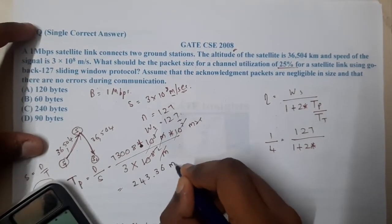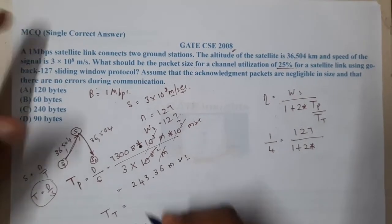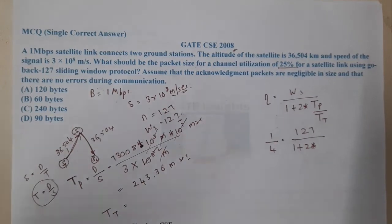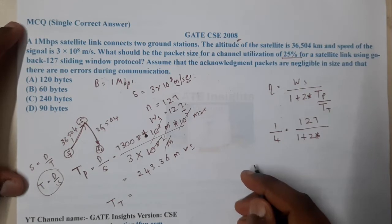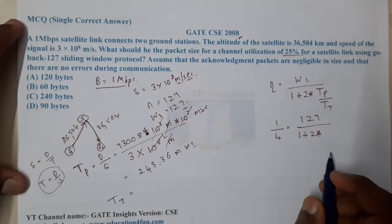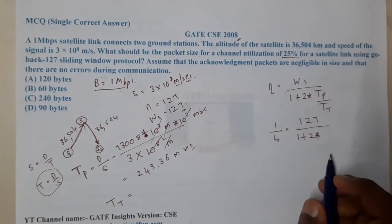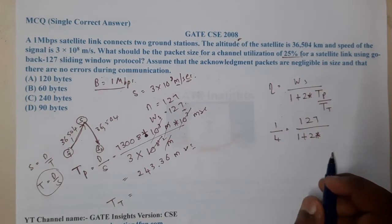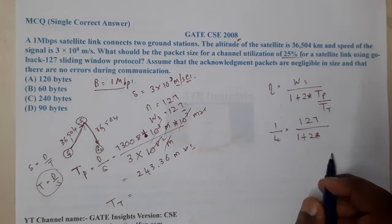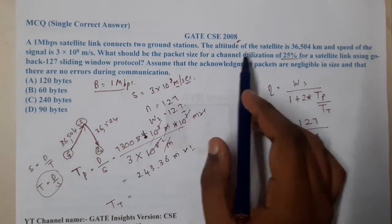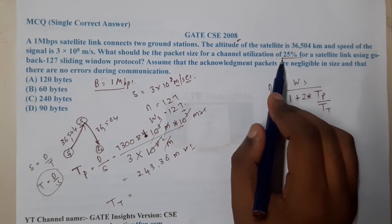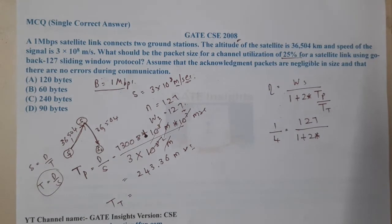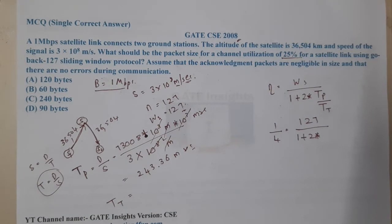What about Tt? Tt is length by bandwidth. Wait, they didn't give the length. Let me cross-check the question. They gave the distance, speed, utilization, and sliding window protocol.